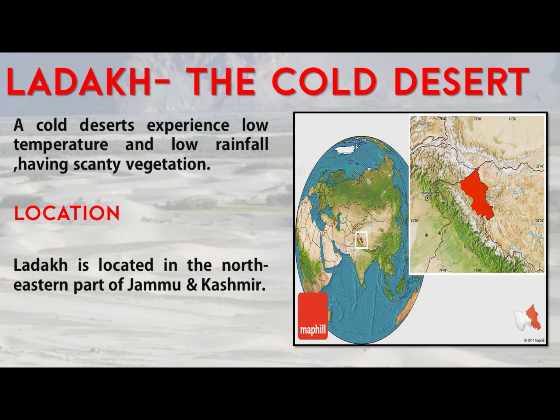Now it's time for the cold desert. The cold desert experiences low temperature and low rainfall, and due to that there is scanty vegetation. As a cold desert we are going to study the Ladakh region. Ladakh is a part of India's union territory and is known as the smallest, coldest desert of the world. It is surrounded by lofty high mountain regions. The height of Ladakh from mean sea level is 3,520 meters. Ladakh is situated in the northeastern part of Jammu and Kashmir, and has been created as a union territory by the government of India.